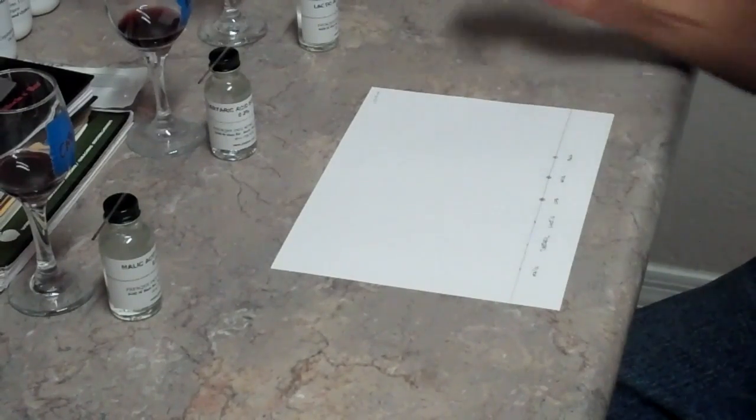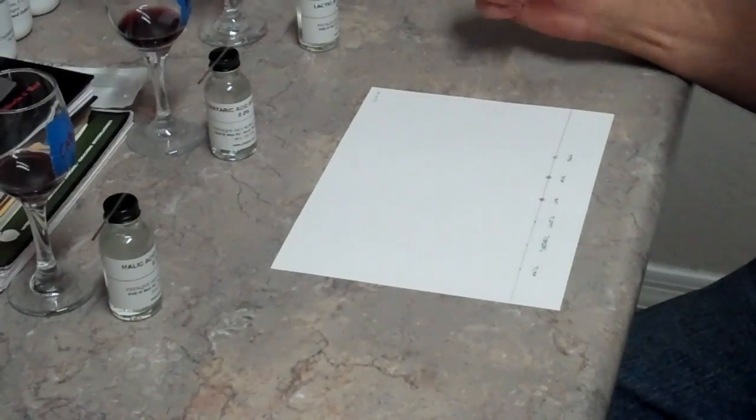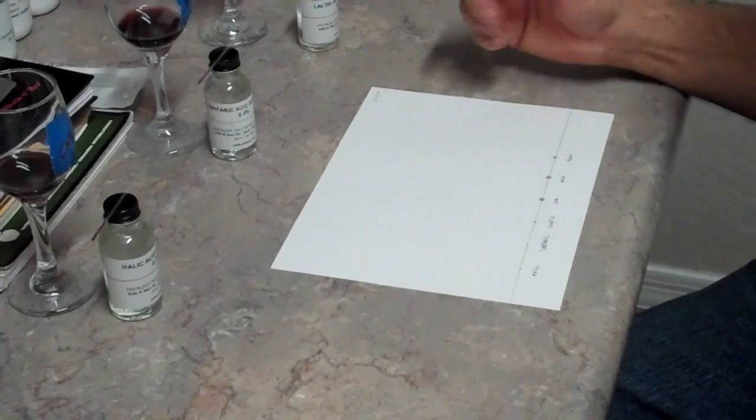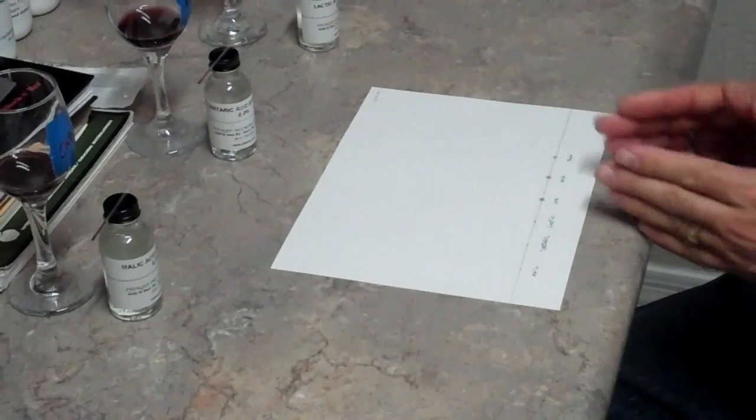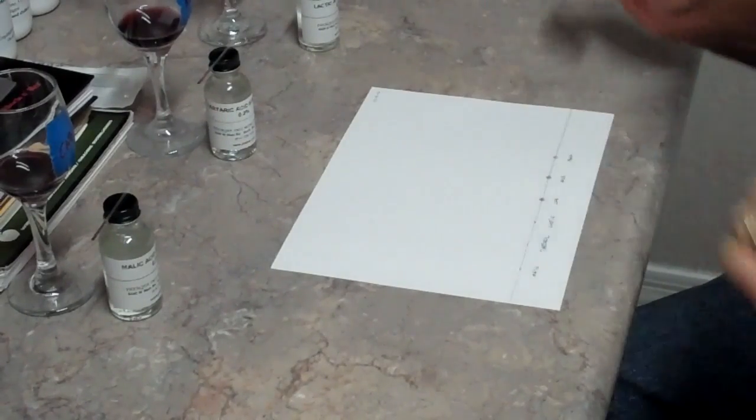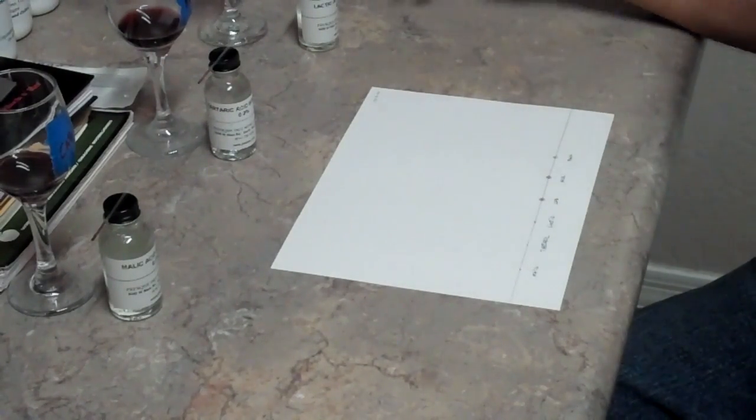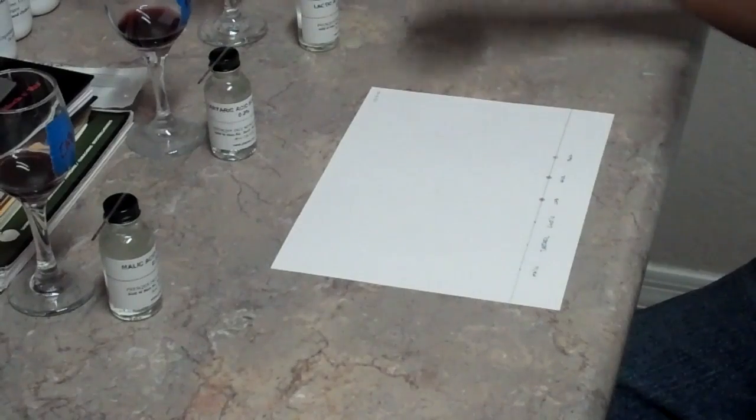We want to make sure that each time we dot it, we let it dry before we dot it again. Otherwise, our sample will get kind of large. What we don't want is for the two to run together. We want to keep them separated. This last one is our Barbera.